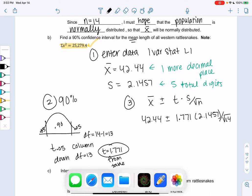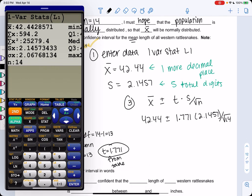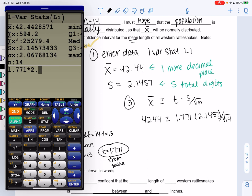So if you have your calculator out, I'm going to do the plus or minus piece. 1.771 times 2.457 divided by square root of 14.